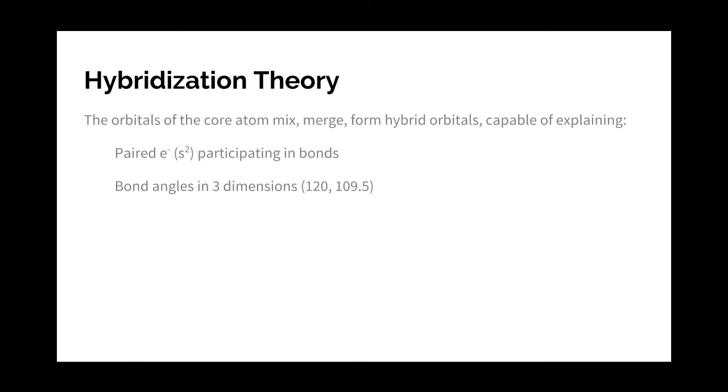And the strength of hybridization theory is that it explains why paired electrons participate in bonds. The paired electrons of carbon's 2s orbital are perfectly happy, they are paired at a low energy. Why do they participate in chemical bonds? Because in order to make those four bonds and end up more stable, it has to mix that s orbital with the p orbitals. And the result is different hybrid orbitals that form bonds with the hydrogens in the methane molecule, and that results in lower overall energy.